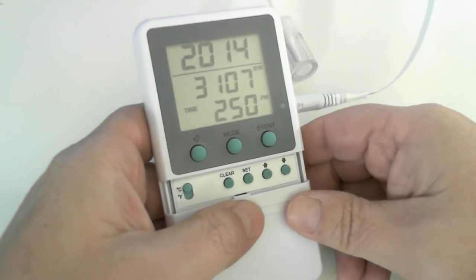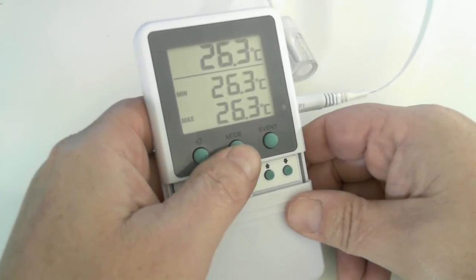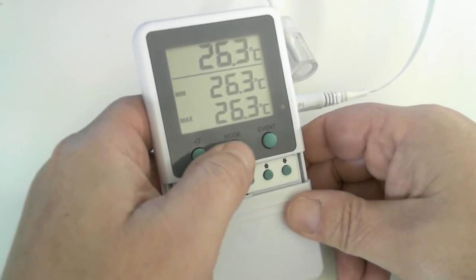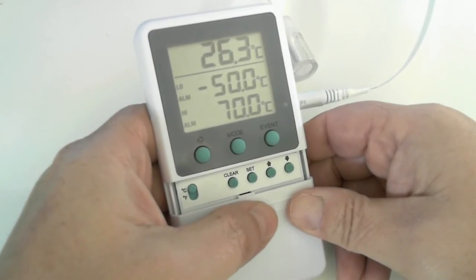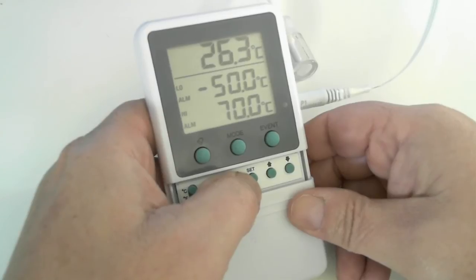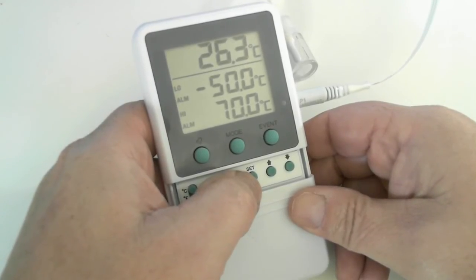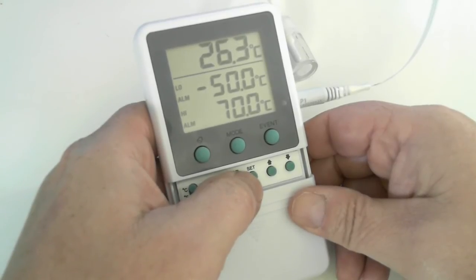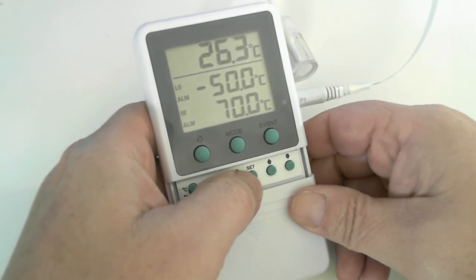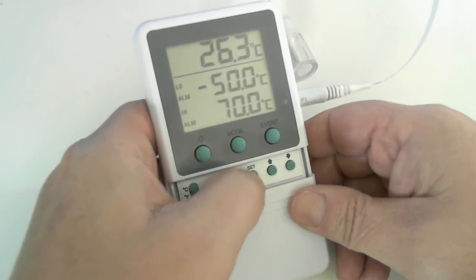Now let's go and configure our alarm settings. Hit the mode. There's our current min-max screen. Let's go one more time. And here's our alarm setting screen. It currently has a low alarm set point of minus 50 degrees C and a high of 70 degrees C. But we're going to be setting our unit up for common vaccines, and they generally are in the range of 2 degrees C for a low alarm setting and 8 degrees C for a high. So hit the set button.